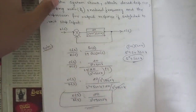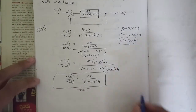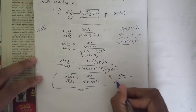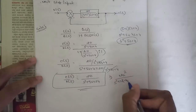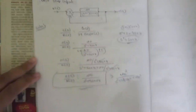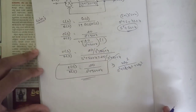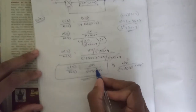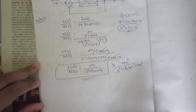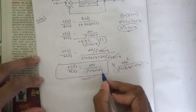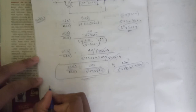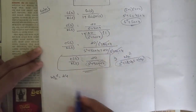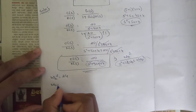Now compare this transfer function with the general form of the second-order control system: ωn² / (s² + 2ζωn·s + ωn²). Considering the denominator (the characteristic equation), in place of ωn² we have 24, so ωn² = 24, therefore ωn = √24.